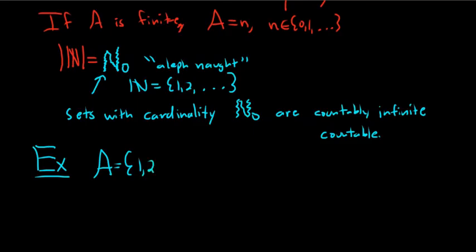A simple finite example: the set {1, 2, 4}. This is a finite set, so the cardinality is just the number of elements. It only has three elements, so card A equals 3.